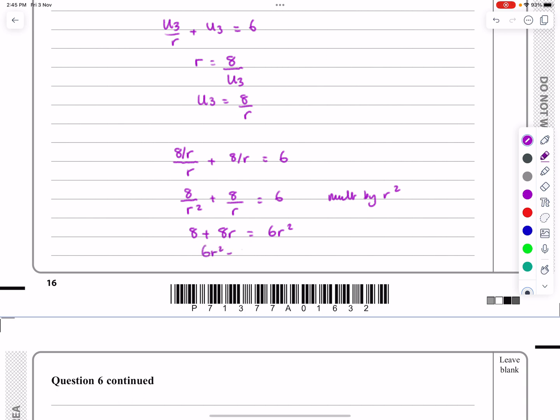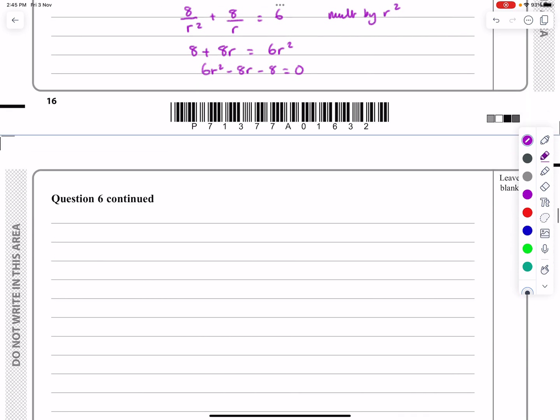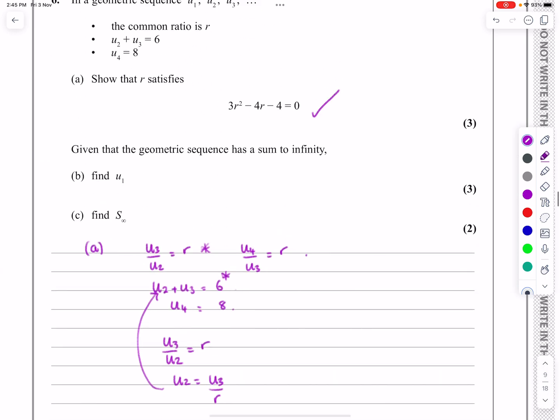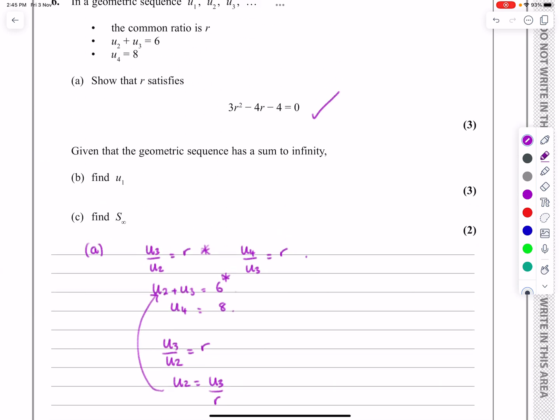And then if I rearrange that, I'm going to get 6R squared minus 8R minus 8 equals 0. We're nearly at what we wanted, just divide everything by 2. So 3R squared minus 4R minus 4 equals 0. And that's what we were trying to prove in that first part there. So part A done.